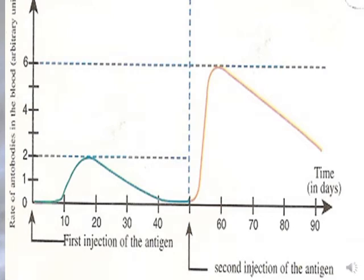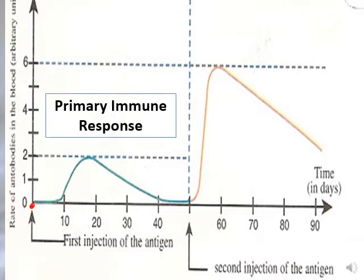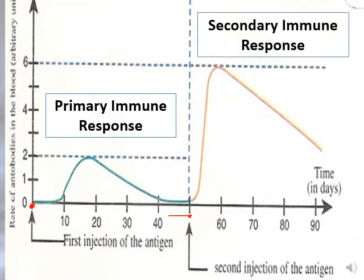This graph shows the amount of antibodies in arbitrary units (AU) as a function of time in days. We inject the antigen at time zero, which triggers the primary immune response. At day 50, we inject the same antigen a second time, triggering the secondary immune response.